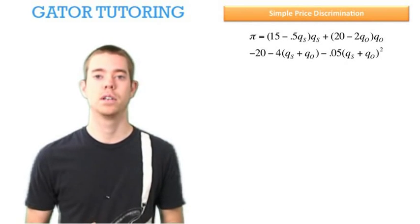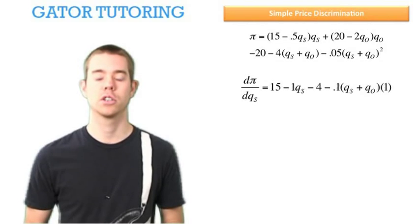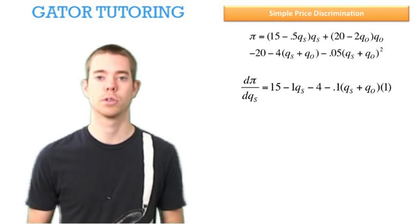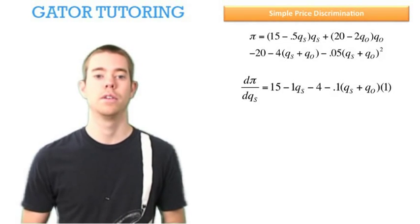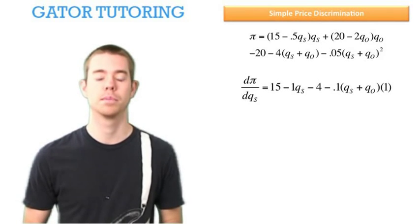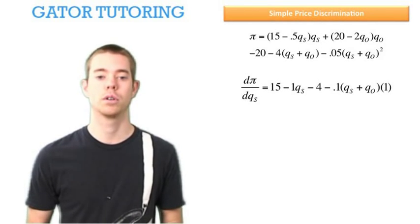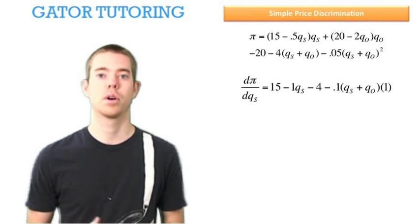Now that we have profit, let's take the derivative with respect to QS. The term (15 - 0.5QS)QS becomes 15 - QS. The second part, the quantity and price of other customers, completely drops out because there is no QS variable.